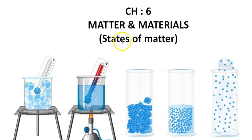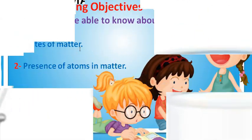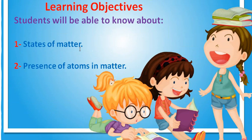In lesson number 1, I told you about matter. Matter is anything that takes up space. Everything in the world is made of matter, and all matter is made of atoms. Atoms are tiny particles, and when two or more atoms join together, they make molecules. By the end of this lecture, we'll cover the following learning objectives: states of matter and the presence of atoms in matter.